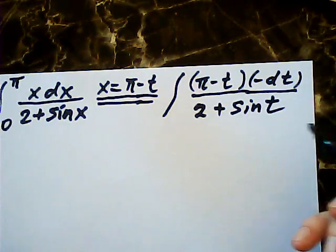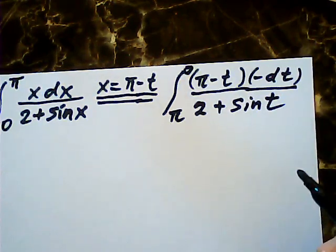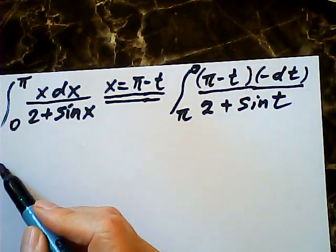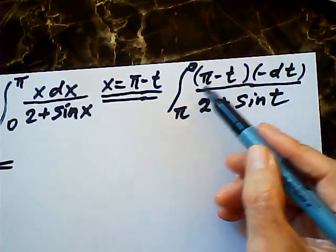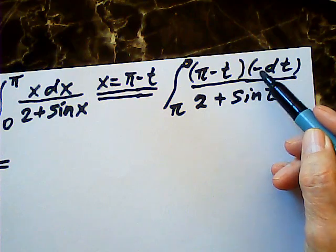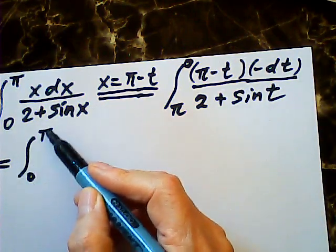Okay, the boundary has been changed from zero from pi to zero. Then this integral can be changed into two integrals. The boundary has been changed by deleting this negative. So it becomes zero to pi.